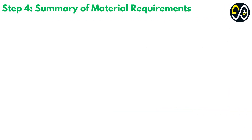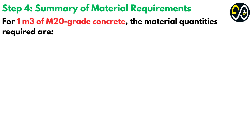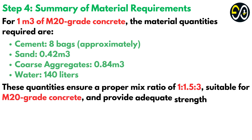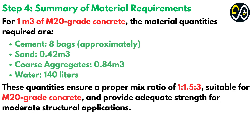Step 4: summary of material requirements. For one cubic metre of M20 grade concrete, the material quantities required are: Cement — 8 bags approximately; Sand — 0.42 cubic metres; Coarse aggregates — 0.84 cubic metres; Water — 140 litres. These quantities ensure a proper mix ratio of 1 to 1.5 to 3, suitable for M20 grade concrete, and provide adequate strength for moderate structural applications.